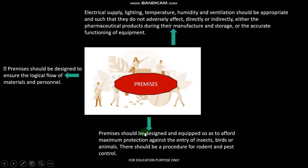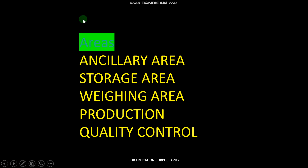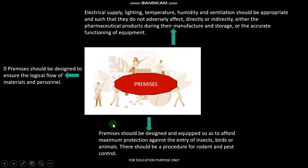The premises should be designed and equipped to afford maximum protection against the entry of insects, birds, animals, and to ensure entry is not direct. The key areas to remember include: ancillary areas, storage areas, weighing areas, production area, and quality control. We have seen the layout of these areas.